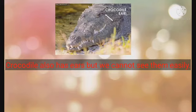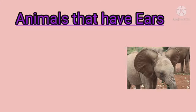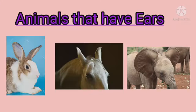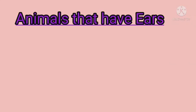Similarly, let us take the example of a crocodile. A crocodile also has ears but we cannot see them easily. Now let us discuss about the animals that have ears. As you can also see in the pictures, the animals that have visible ears are rabbit, horse and elephant.